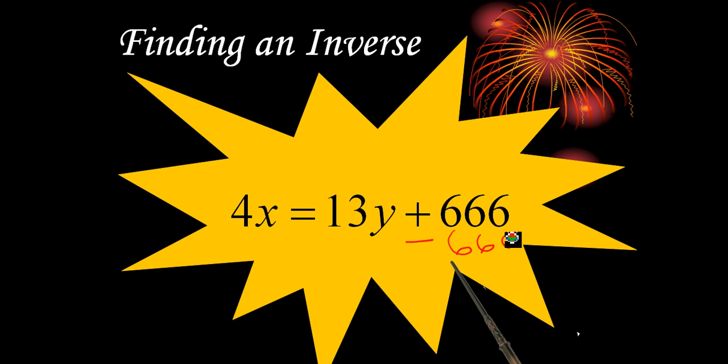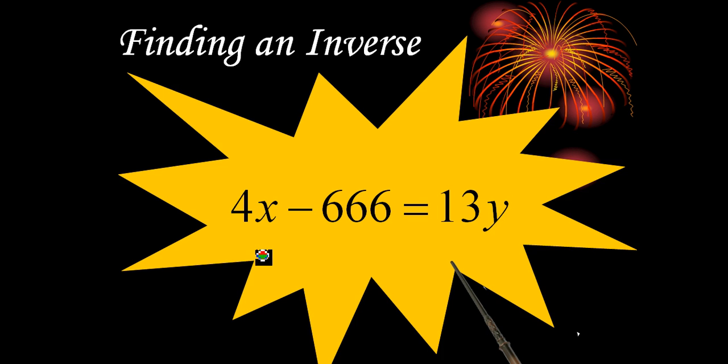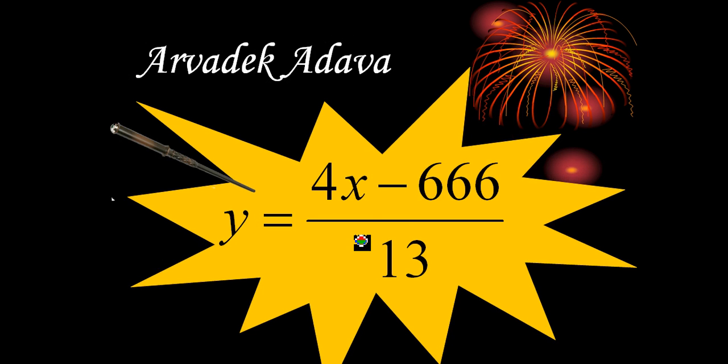Then you would subtract 666 from both sides, ending up with 4x minus 666 equals 13y. Then if you divide both sides by 13, you end up with y equals 4x minus 666 over 13.